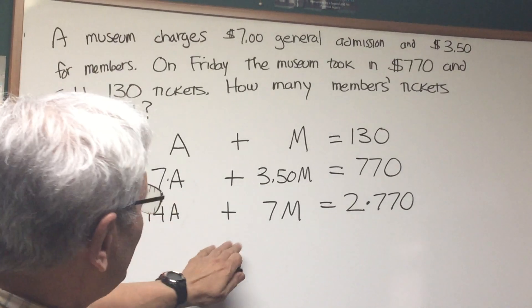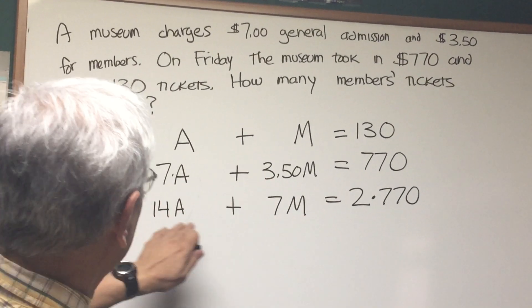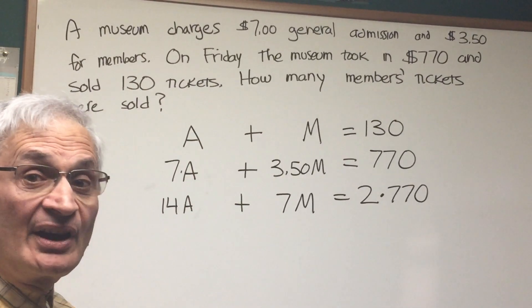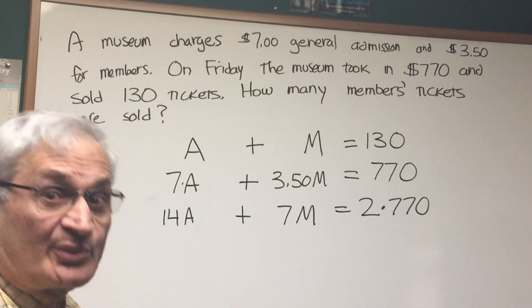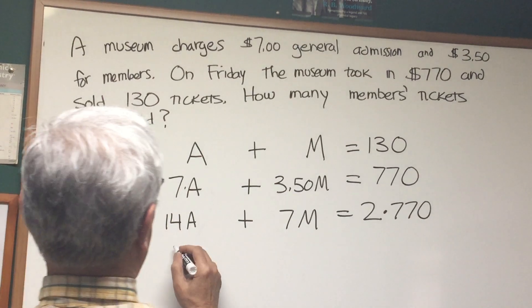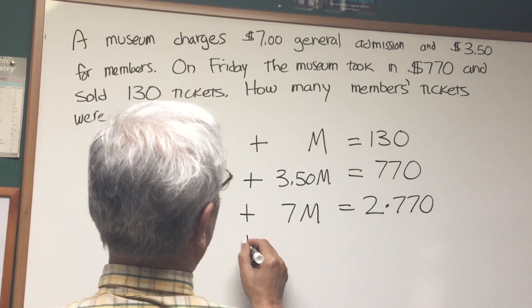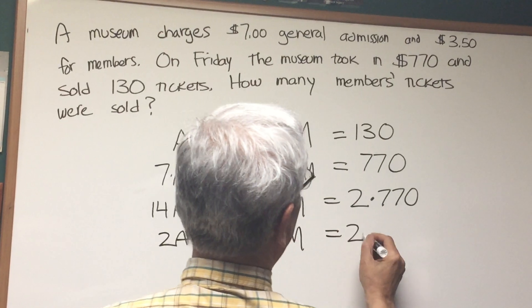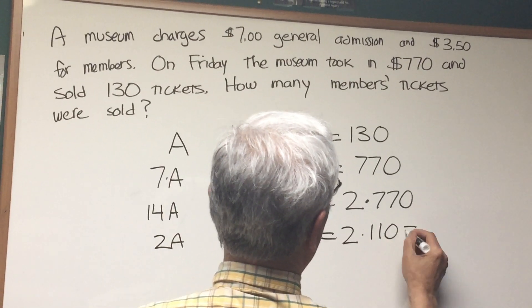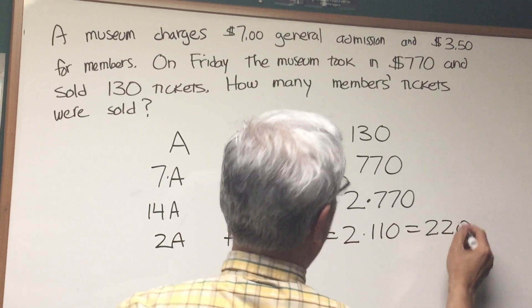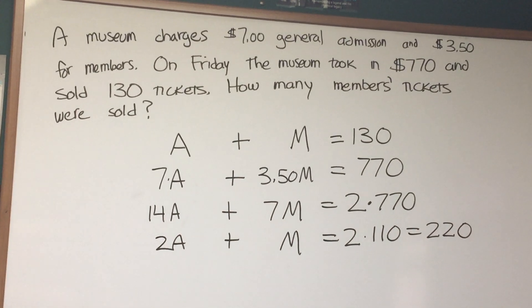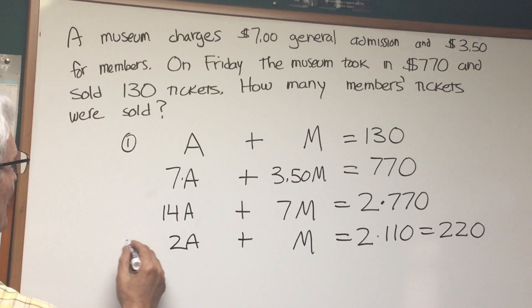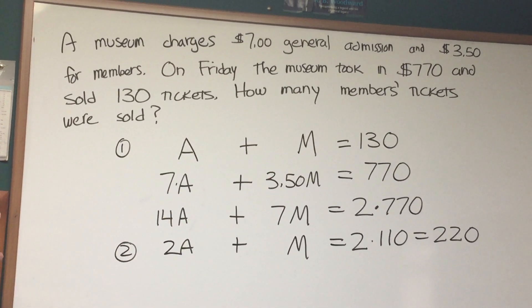Now look at this second equation. I notice that I can divide everything by 7 — you have to be very opportunistic when solving these problems. 7 into 14 goes 2, 7 into 7 goes 1, and 7 into 770 is 110... or that would be 220. So what do we have? We have equation one and equation two, and all we have to do is solve them.